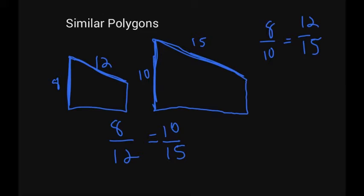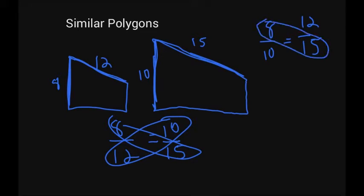In any way you do it, you'll notice when we cross multiply we're going to multiply the same numbers. I got 8 times 15 and 12 times 10 in my first one. My other one I have 8 times 15 and 12 times 10. Either way I'm going to get 12 times 10 is 120, and 8 times 15 is 120. So those are equal, so those polygons are similar.